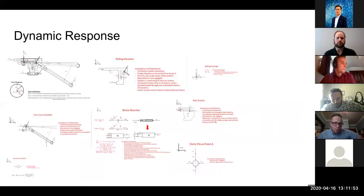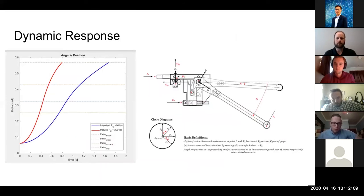An analysis was also performed to determine the dynamic response of the mechanism. Free body diagrams were drawn for each of the components to determine forces and also the motion of the mechanism. From the results of the response, it was determined that with an input force, an operator input force of 50 pounds, the mechanism would remove an anode in approximately one second, which was really good.